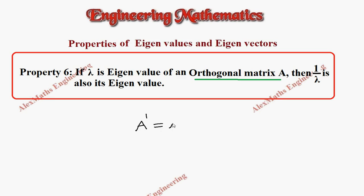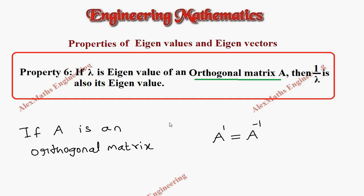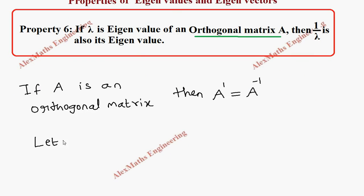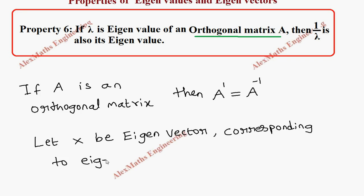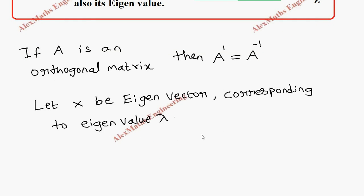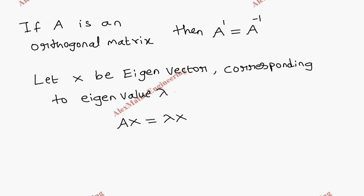So we can say, if A is an orthogonal matrix, then A dash is equal to A inverse. Let's take X to be the eigenvector corresponding to eigenvalue lambda. Therefore, AX equals lambda X. Let's pre-multiply this by A inverse on both sides.